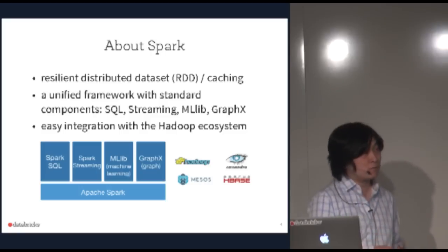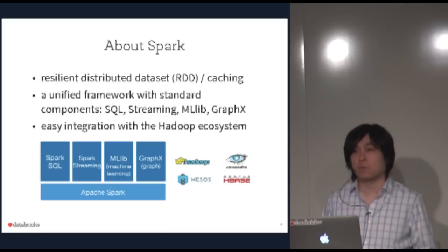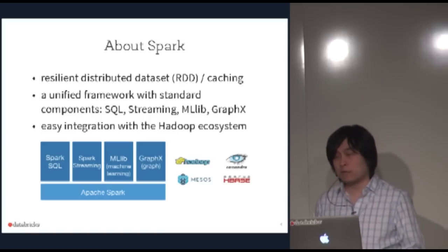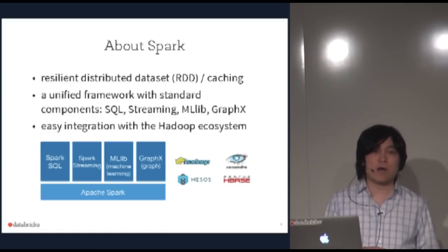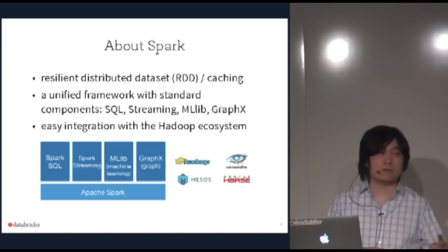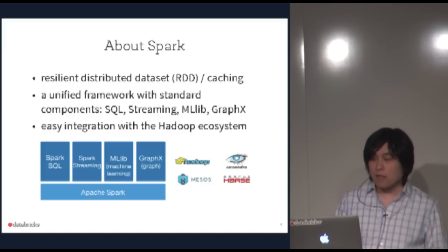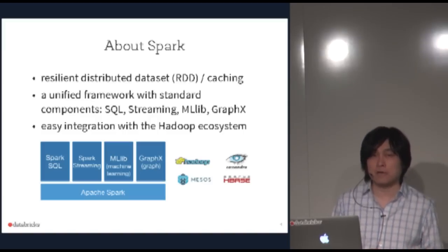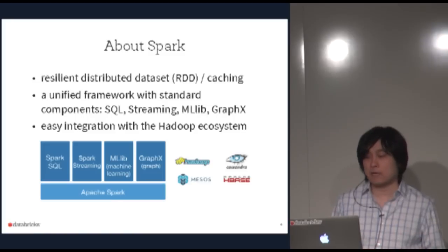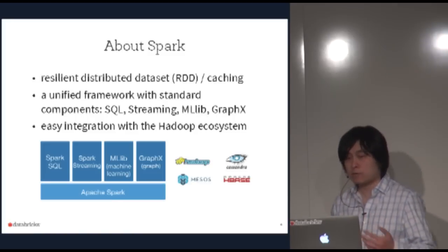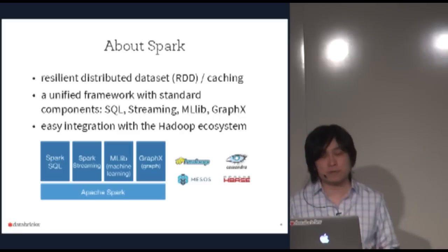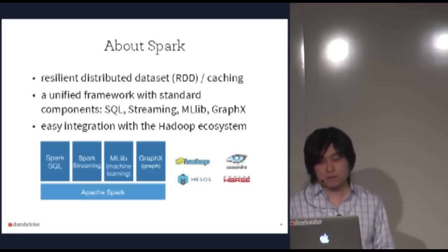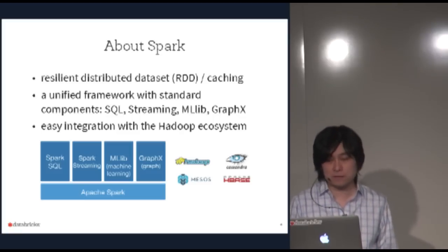Spark works really well with the Hadoop ecosystem. It doesn't have its own storage layer — it can talk directly to HDFS through Hadoop input formats, to Amazon S3, and integrates well with Cassandra, Mesos, and HBase. So it's a good player in the Hadoop ecosystem.